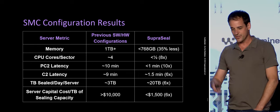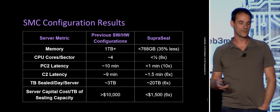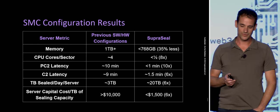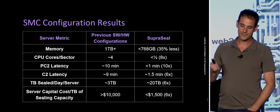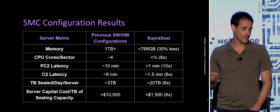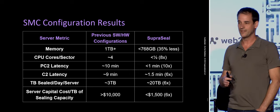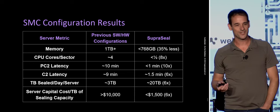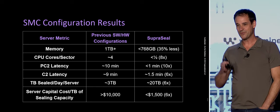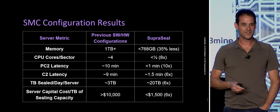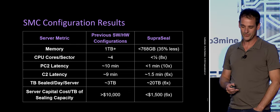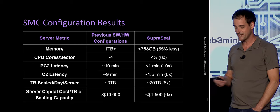Looking at the results comparing the same sealing flow before and after: there's a reduction in memory, an 8x improvement in core utilization on CPUs, a 10x improvement in PC2 latency, and 6x improvements in C2 latency — the SNARK generation — as well as improvement in terabytes per day sealed on a single server and an improvement in overall capital cost. Anytime you see a 6x improvement on something already optimized, that's pretty exciting. The one-third cost that was sealing is now 6x cheaper. These improvements will allow a lot more data to come onto the Filecoin network.